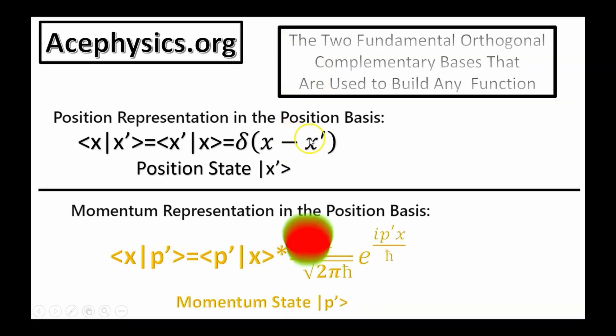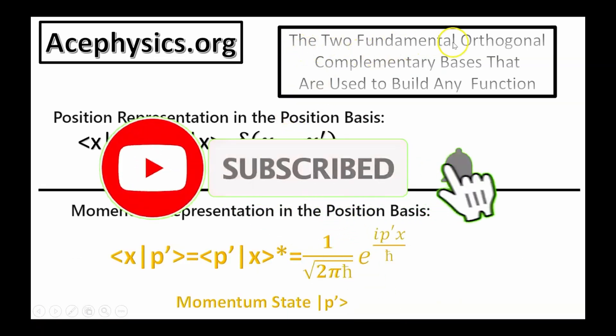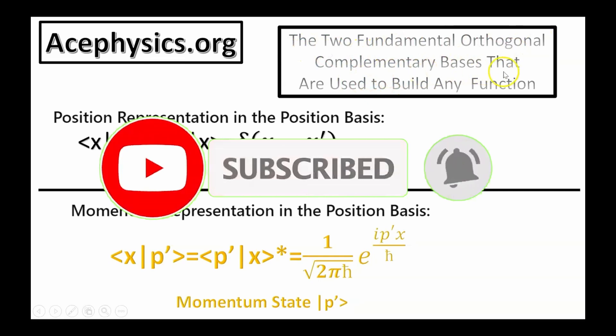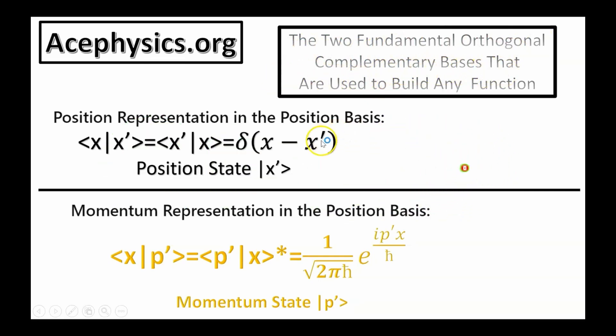On this slide, I present the two fundamental orthogonal complementary bases that are used to build any function. There's the Dirac delta function and the complex exponential. Any wave function in quantum mechanics can be expressed as a linear combination of either position or momentum eigenfunctions.